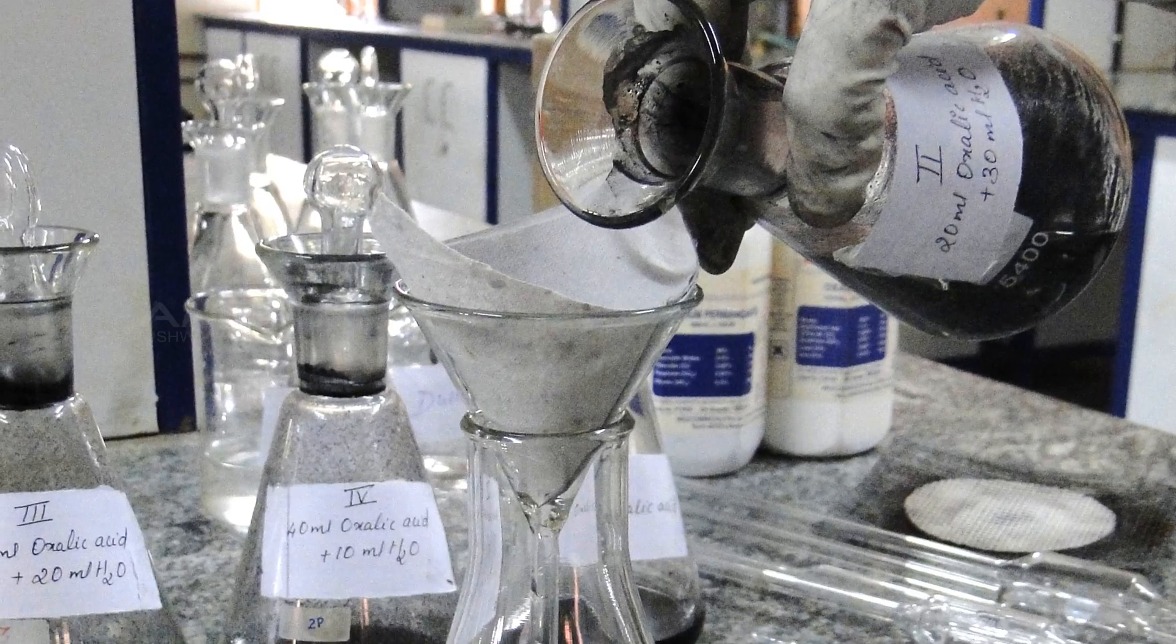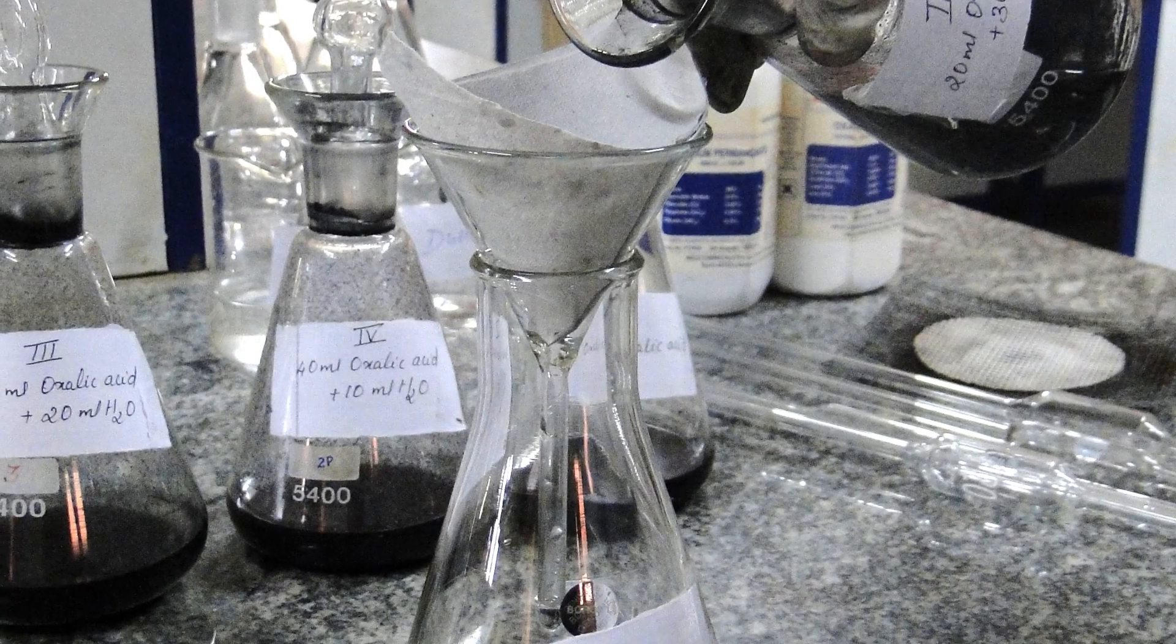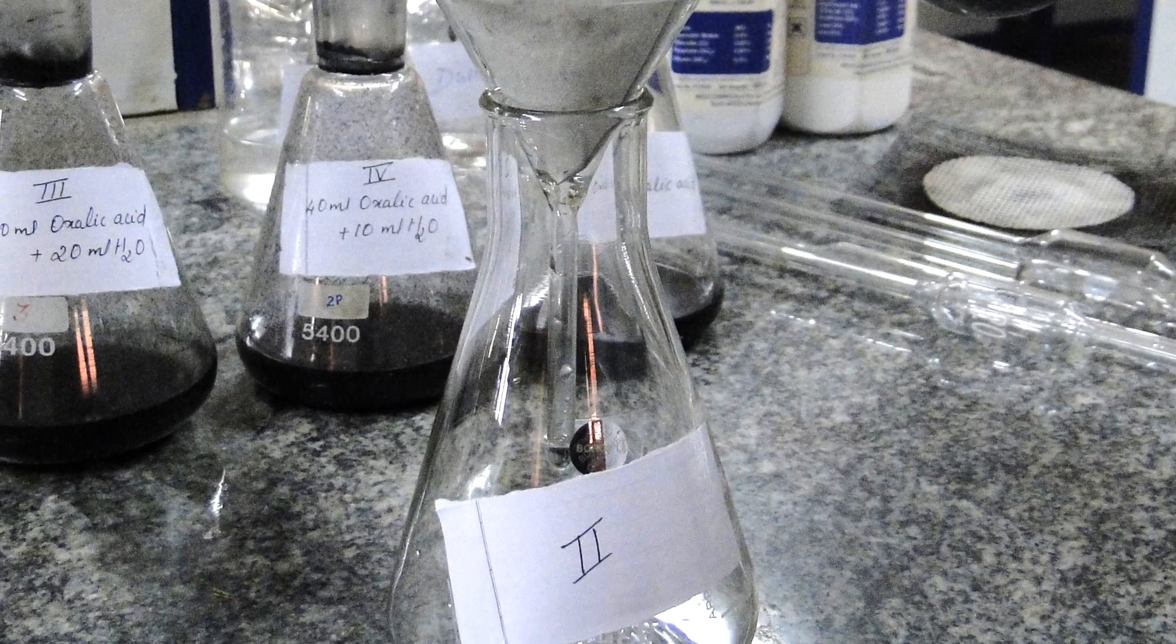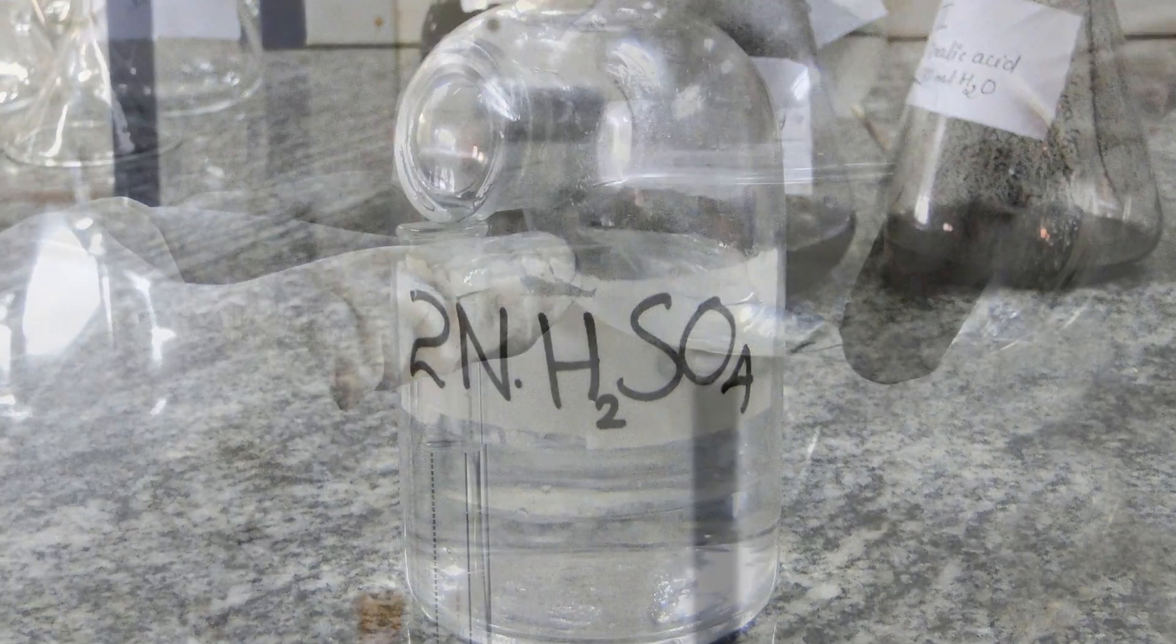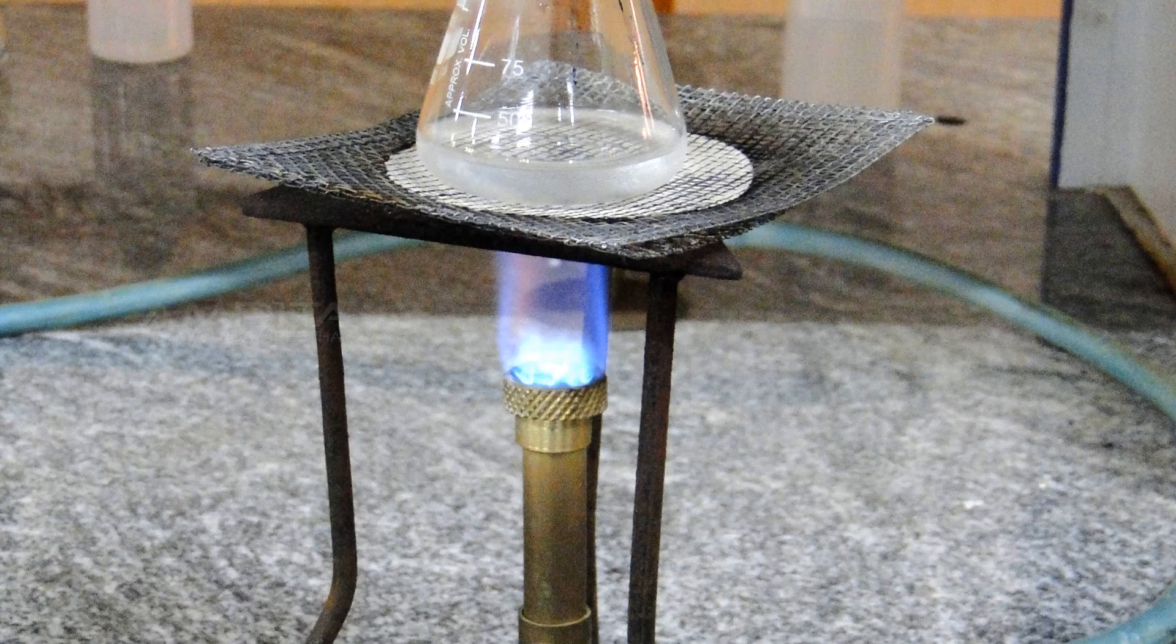Filter each solution using different funnels and filter papers into separate conical flasks. Add 10 ml of 2 normal H2SO4 to the filtrate. Heat the solution for 5 minutes.